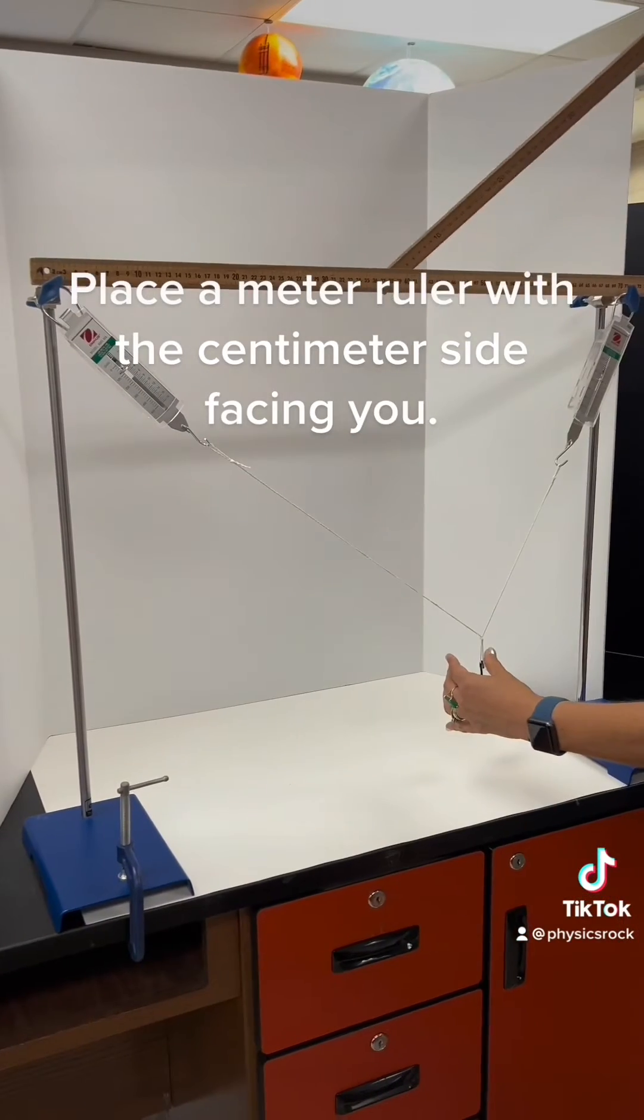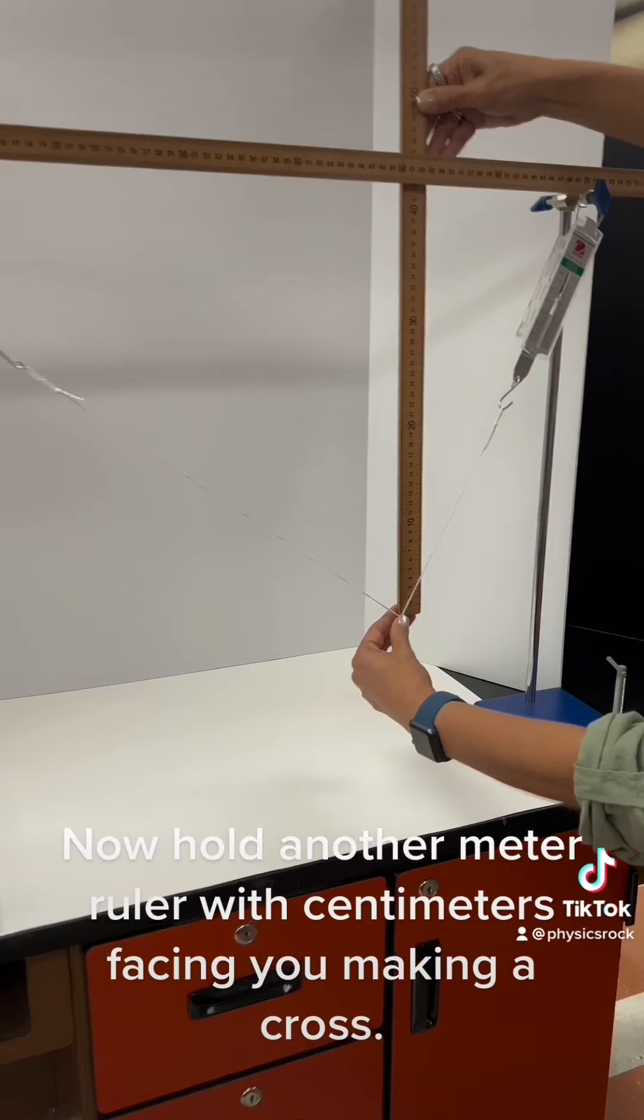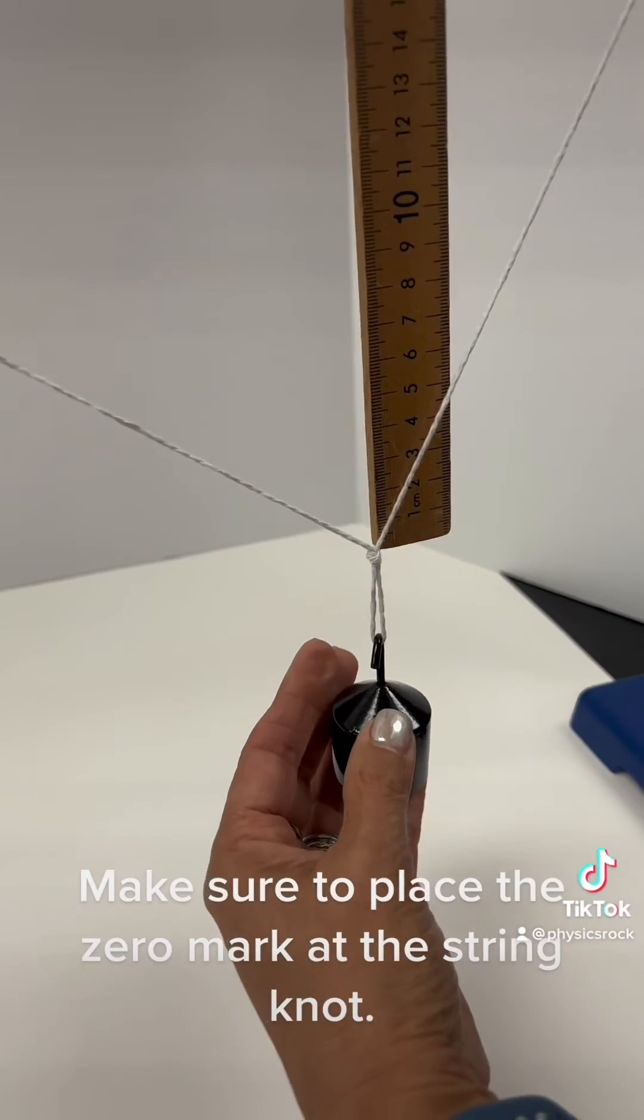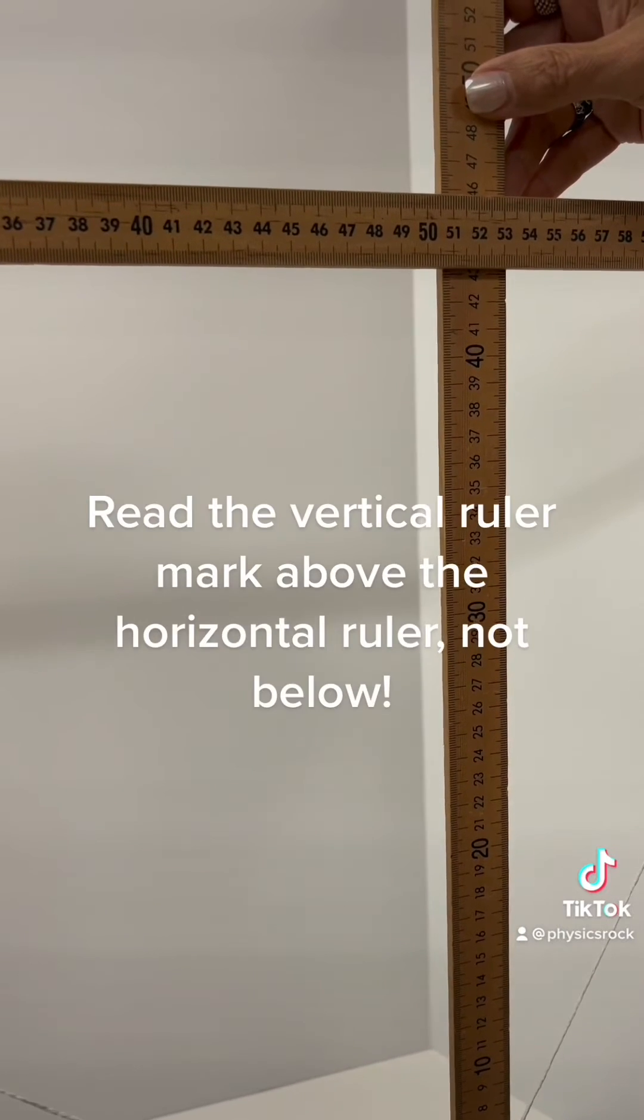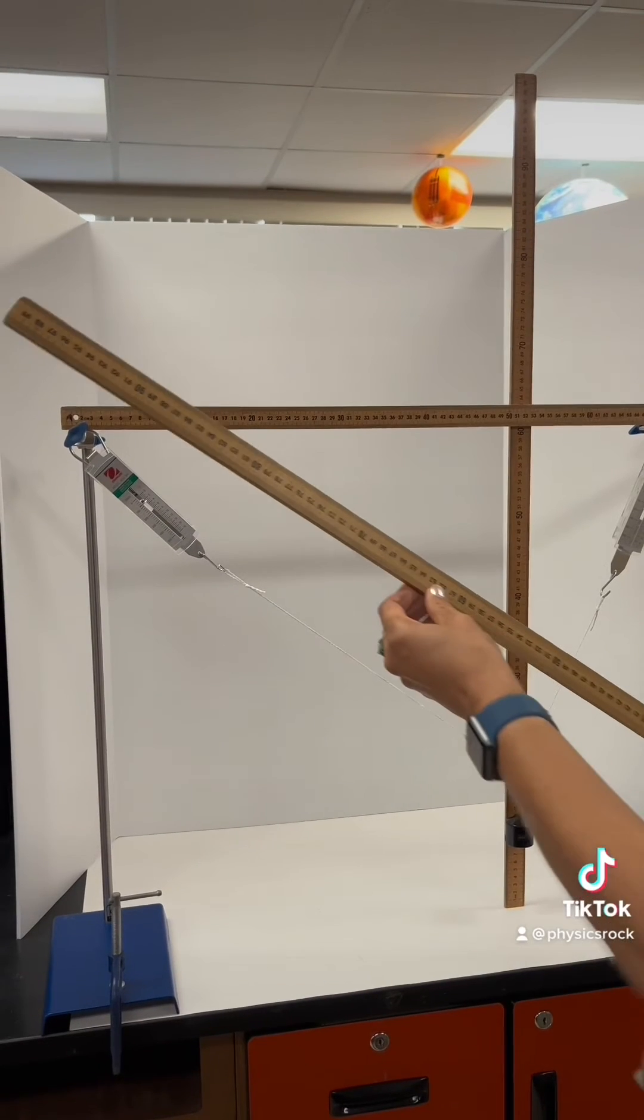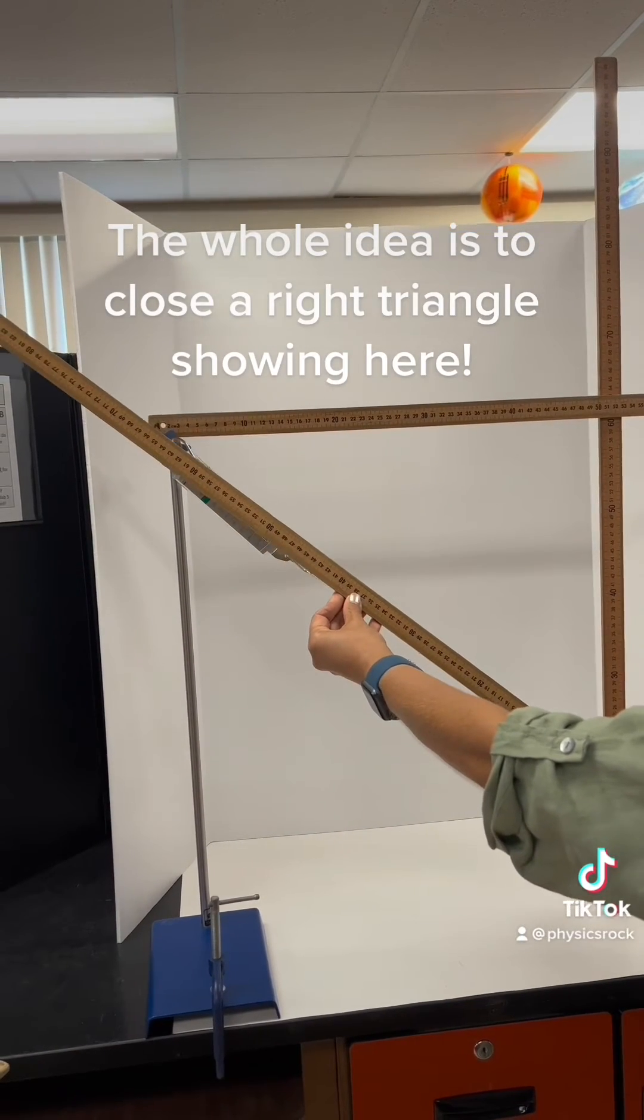Place a meter ruler with the cm side facing you. Now hold another meter ruler with cm facing you making a cross. Make sure to place the zero mark at the string knot. Read the vertical ruler mark above the horizontal ruler, not below. The whole idea is to close a right triangle showing here.